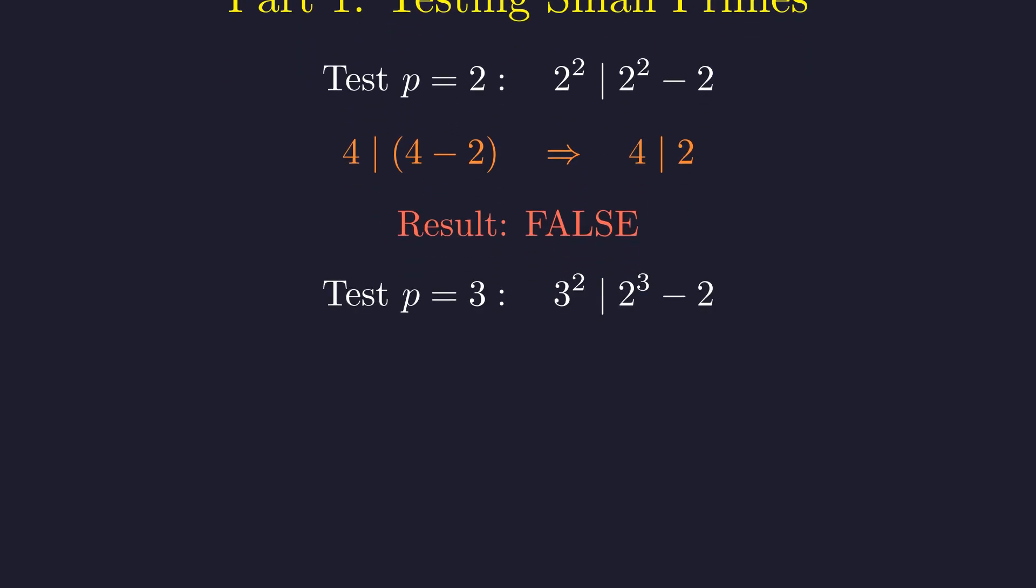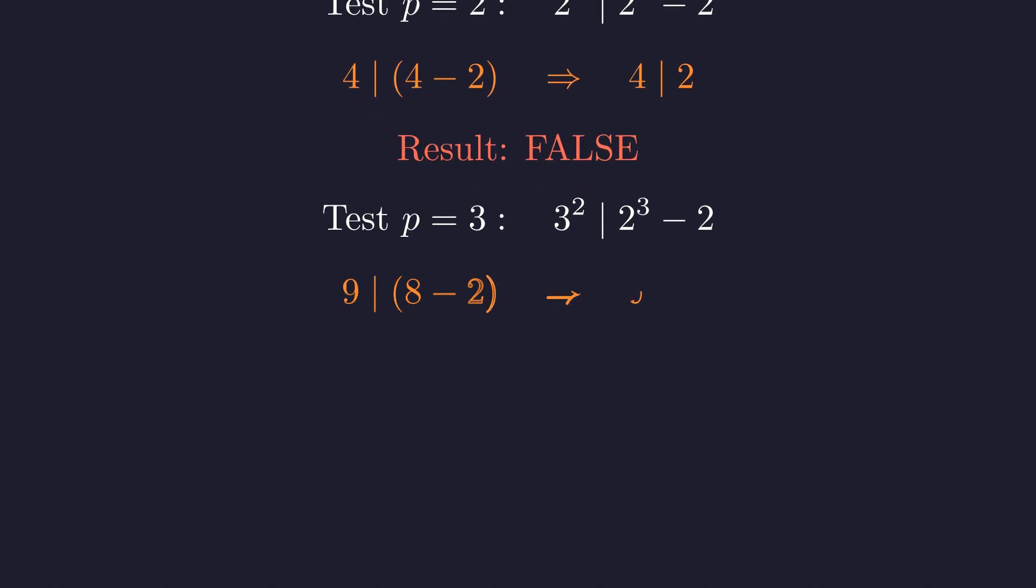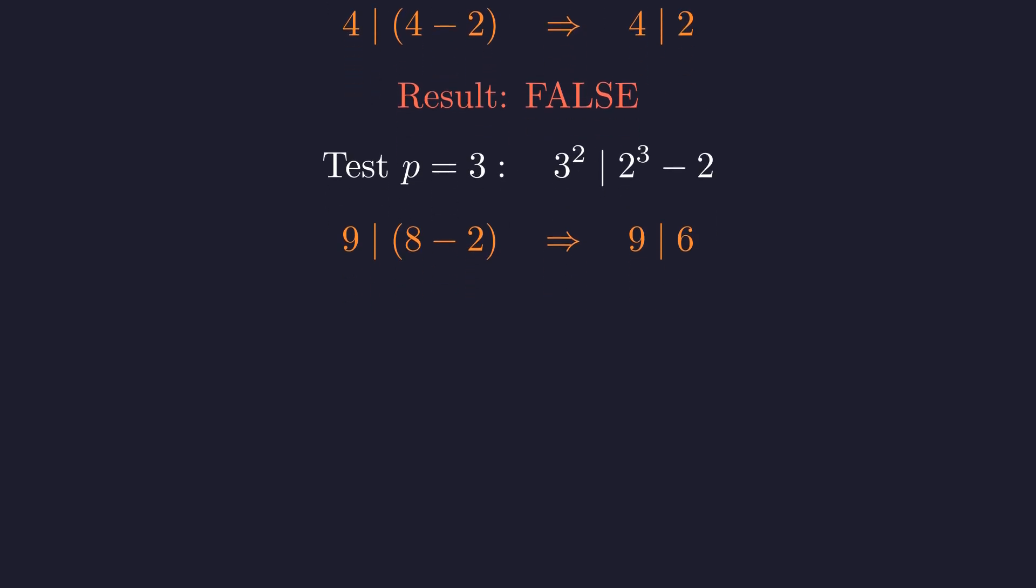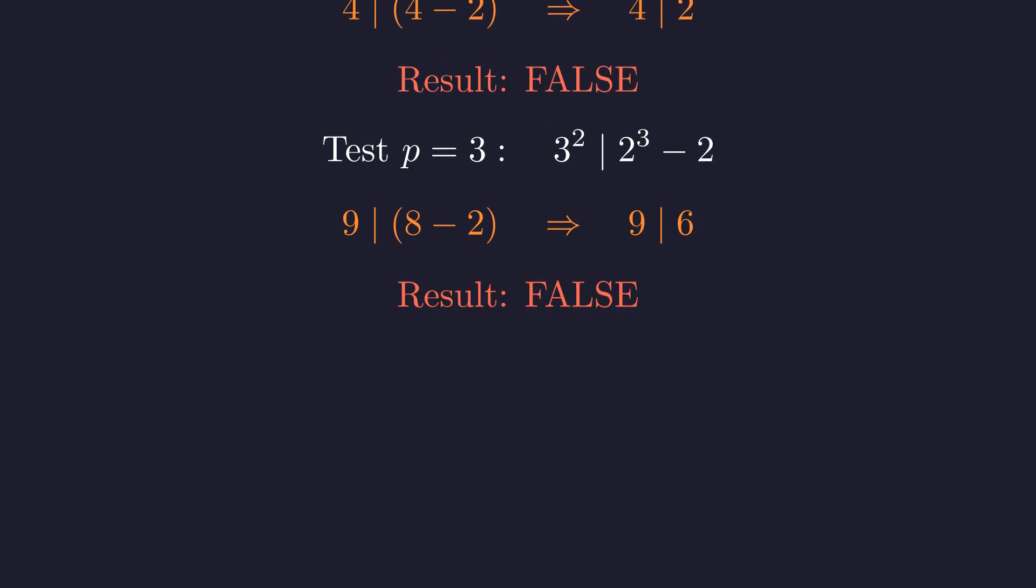Next, p equals 3. We check whether 9 divides 2 cubed minus 2. 2 cubed equals 8, so we need 9 to divide 8 minus 2, which is 6. 9 does not divide 6, so p equals 3 also fails.